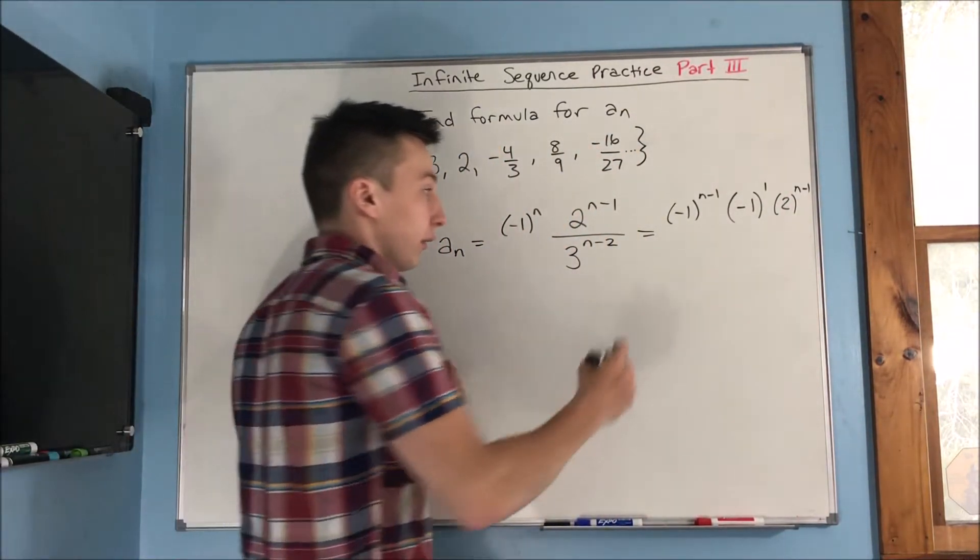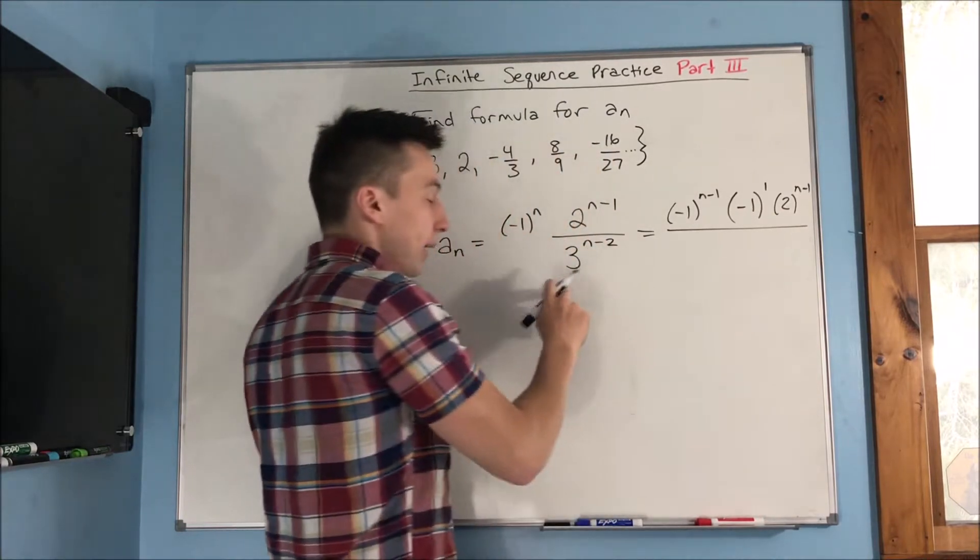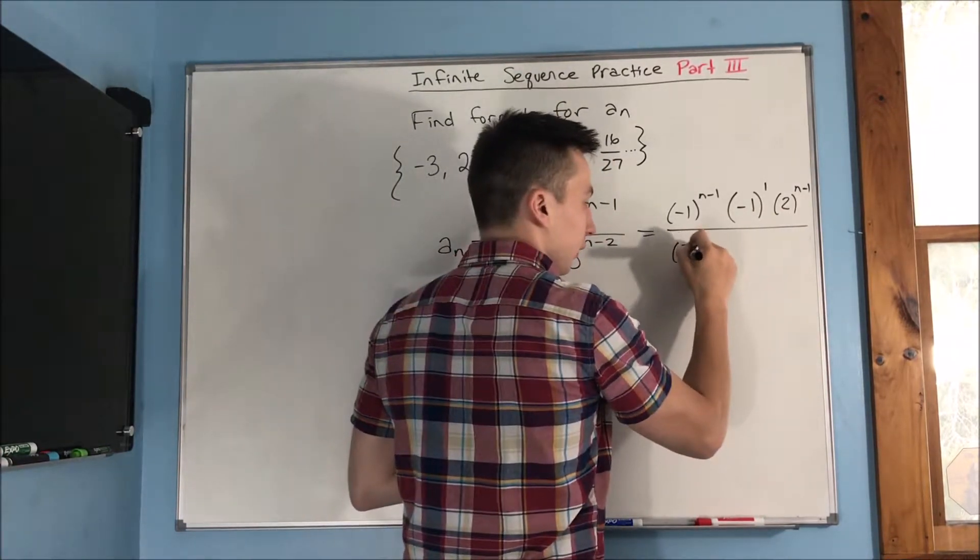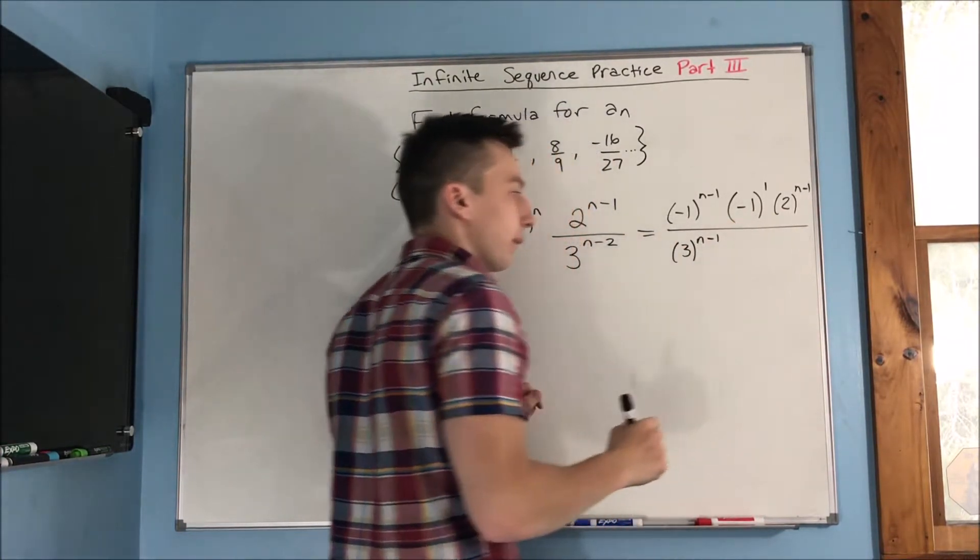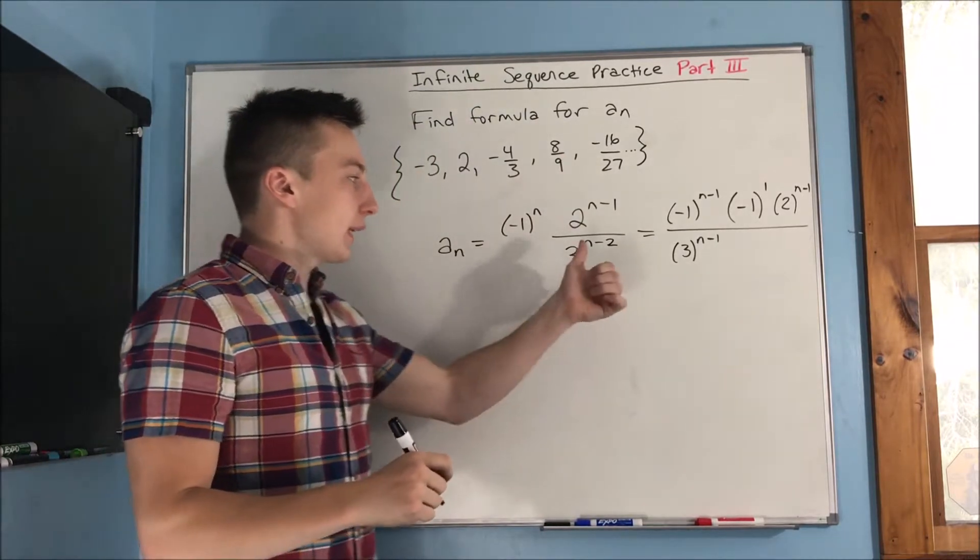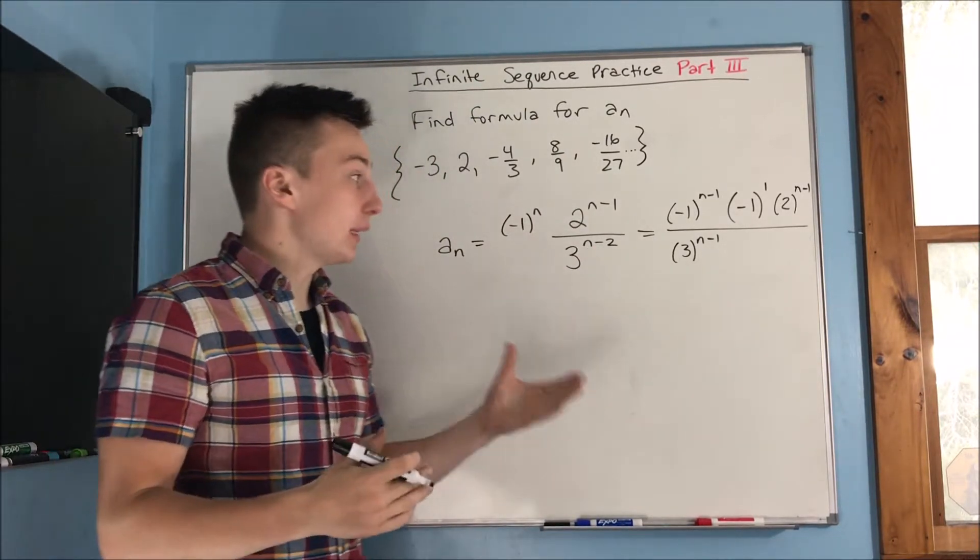And in the denominator, if we make this a three to the n minus one, well then what do we need to make this n minus two? Well, we just need a three to the negative one.